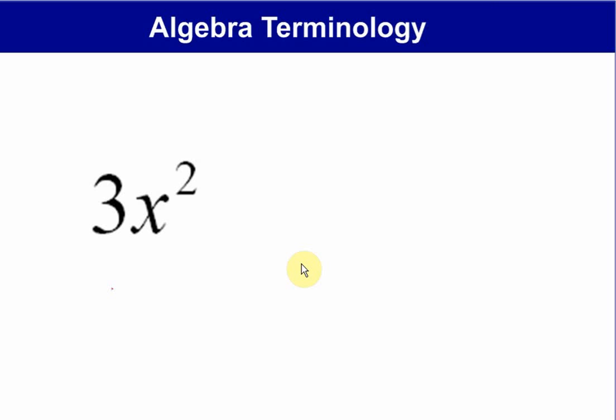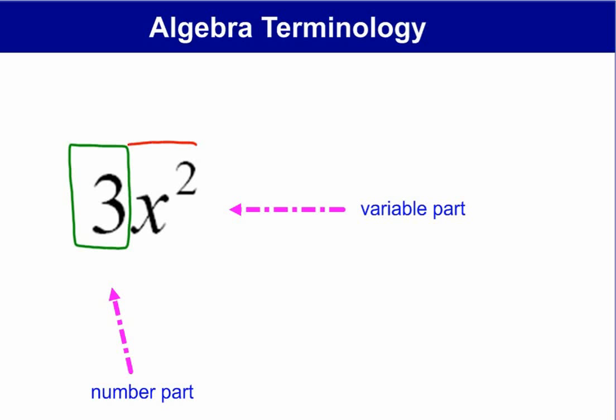So 3x squared is what's called a term, and we'll show that in just a moment. But each term is made up of two parts. The first part is called the number part. So 3 is the number part. Then there's also a variable part. x squared is the variable part. So just put a couple of labels on here. Every term has a number part and a variable part. Now the variable part, you'll notice, has both a base and an exponent. Much like our previous discussion on powers where we had bases and exponents. x squared is a power. It has a base of x and an exponent of 2.